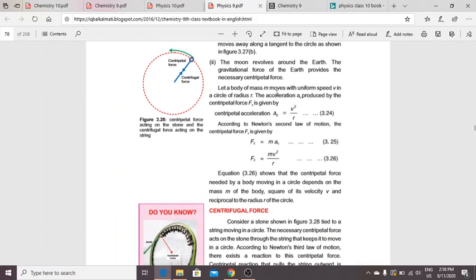Let a body of mass m move with uniform speed v in a circle of radius r. The acceleration provided is given by ac equals v squared over r. Due to the second law of motion, fc equals mac, so fc equals mv squared over r.